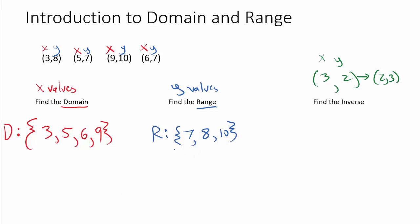Finally, if I were to write the inverse for this function, all the ordered pairs, I'm just going to take these ordered pairs and flip-flop the order. So the first ordered pair we would rewrite as 8, 3. The second ordered pair would be 7, 5. The next ordered pair would be 10, 9. And the last one would be 7, 6. Again, that's a very brief introduction to domain, range, and also inverses of a function.